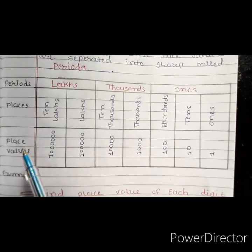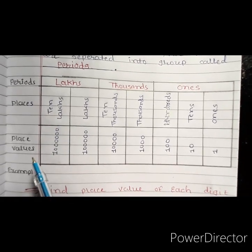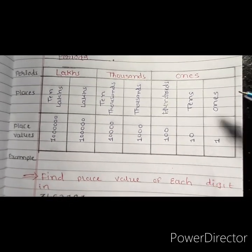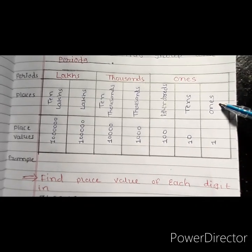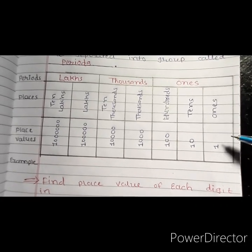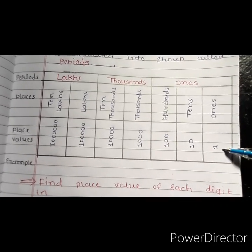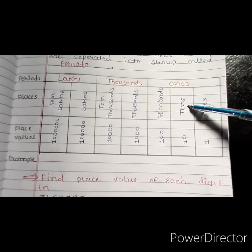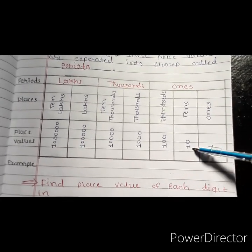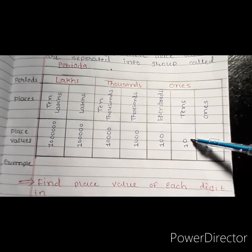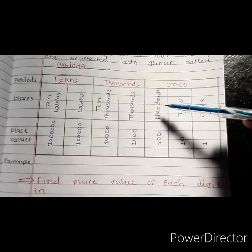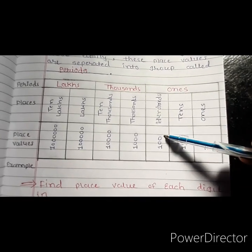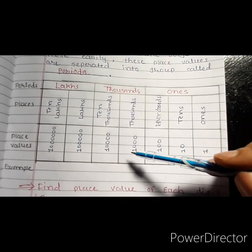So now let's move on to the place values. Starting with the Ones period: the place value of Ones is 1. Tens has a place value of 10. Hundreds has a place value of 100. And Thousands has a place value of 1,000.